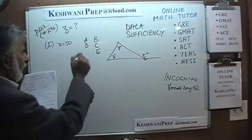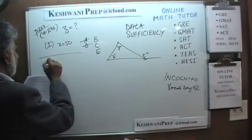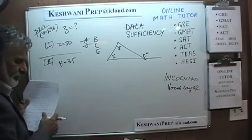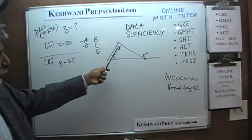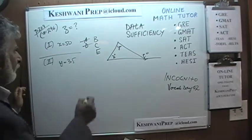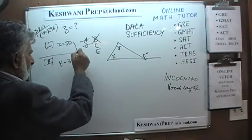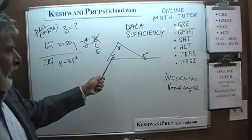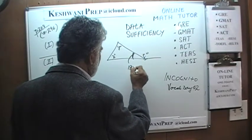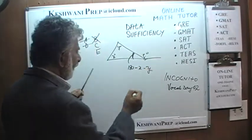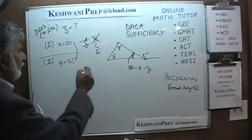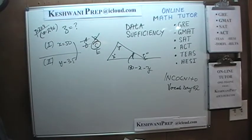The first statement by itself is not enough, so the answer cannot be A or D. The second statement tells us that Y is 35. Again, the second statement by itself is not enough — simply knowing Y does not enable us to figure out Z unless we know X. But when we put them together, if we know X and Y, we can figure out the missing angle, which is simply 180 minus X and Y, and from that we can figure out Z. The answer is C — putting the two statements together does the job.